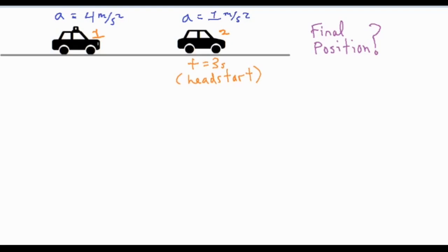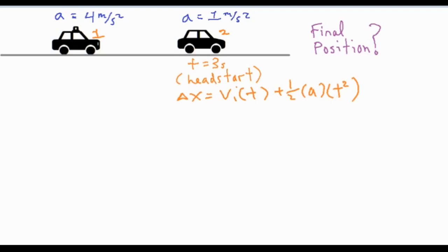Both cars start from rest, except car two got a three-second head start. We can find how much it's moved using the formula: x = v_i·t + ½·a·t². We don't need the first part since it starts from rest, so we just need ½·a·t². With a = 1 and t = 3: ½ × 1 × 3² = ½ × 9 = 4.5 meters.